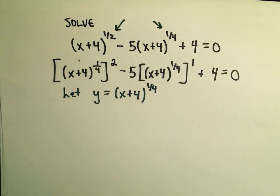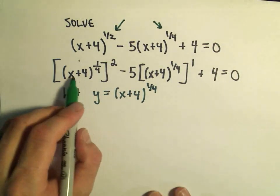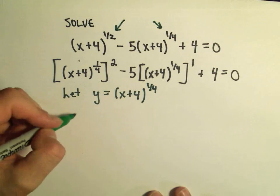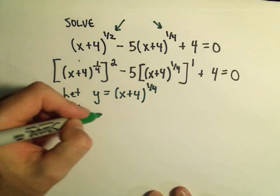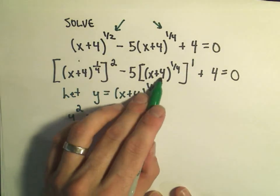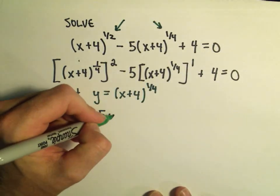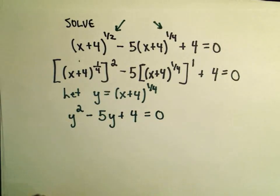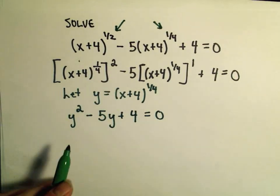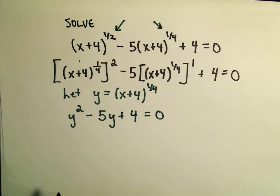Well, what I can do is I can rewrite this first part, instead of x plus four to the one-fourth, I can write that as y squared minus five times, well, again, x plus four to the one-fourth is the same thing as y, plus four equals zero. And now what I have to do is I've kind of turned it back into a more familiar quadratic that I'm going to try to solve.